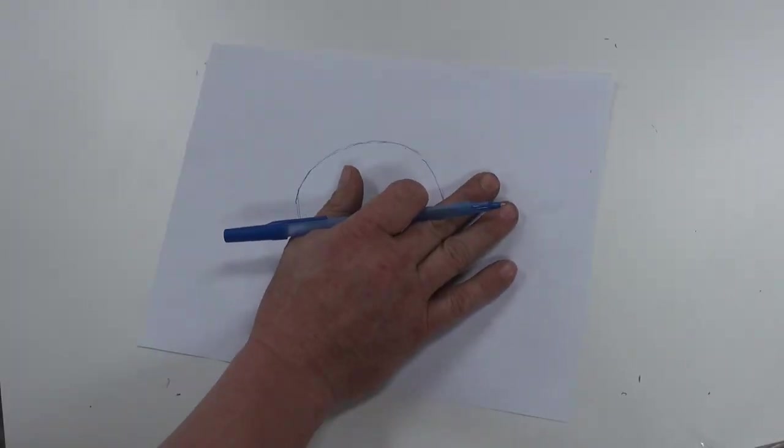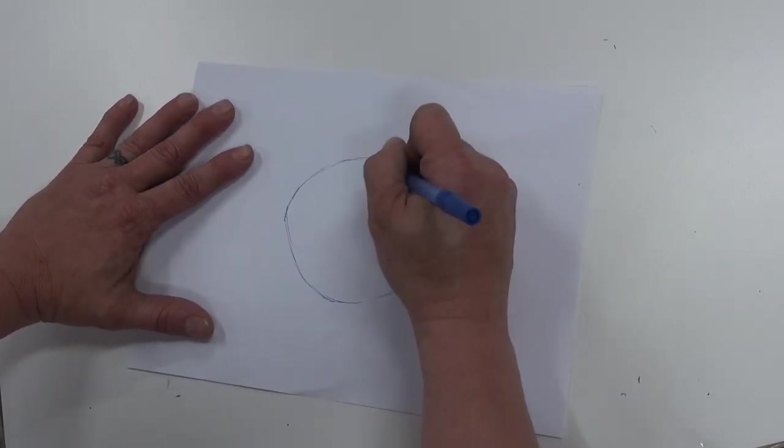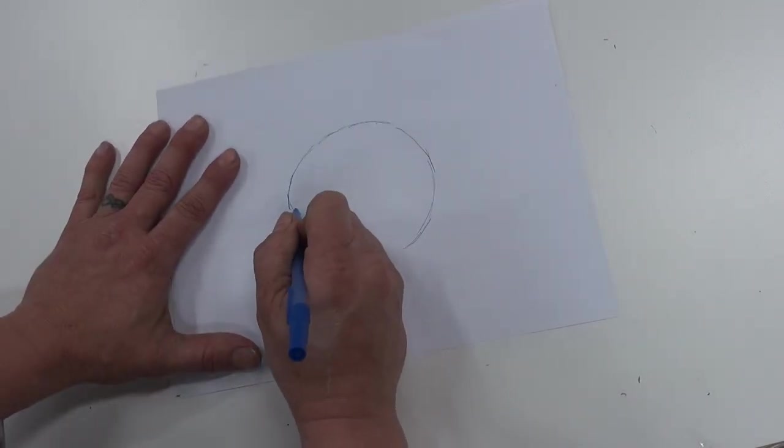I'm going to try to draw a circle. Well, I've seen better circles, but we're going to go with that. My sunburst happens to be a quarter of the circle.